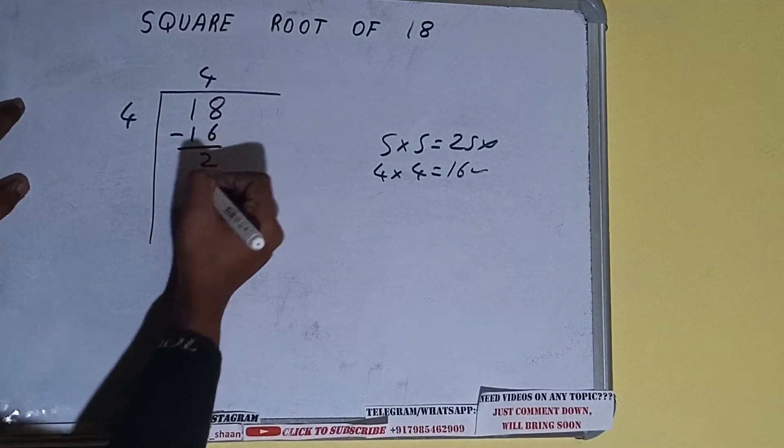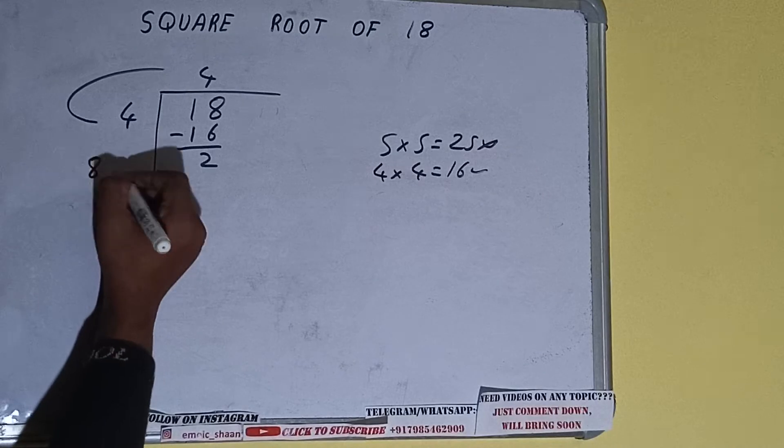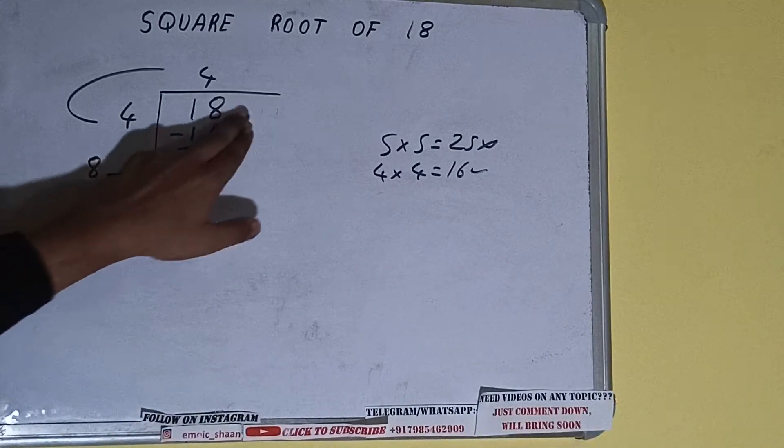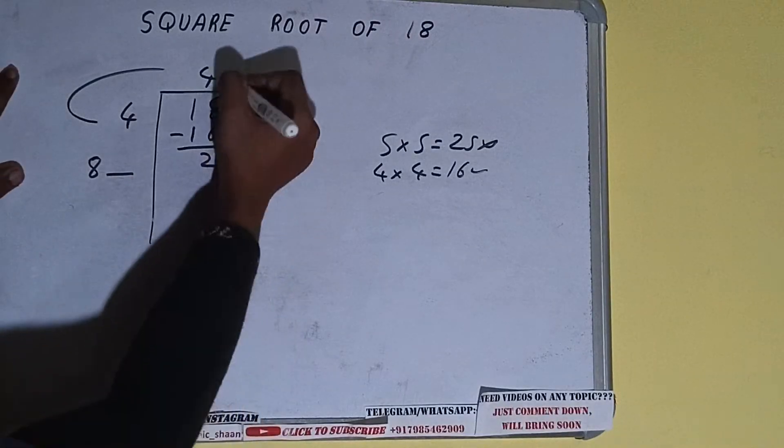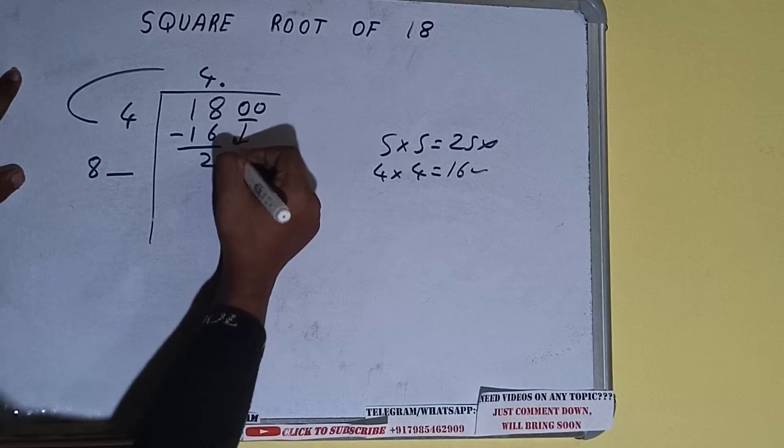Subtract, 2 will be left. We did 4 into 4, so add both. 4 plus 4 will be 8. Write it here and keep a digit extra. This number we need to make it big, but we don't have more pairs, so we'll put a decimal. Once we put the decimal, we can bring a pair of zeros down and the number will become 200.